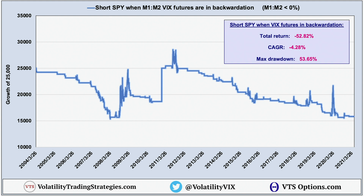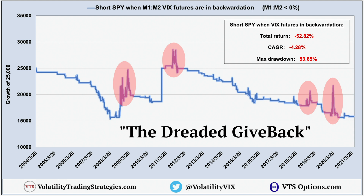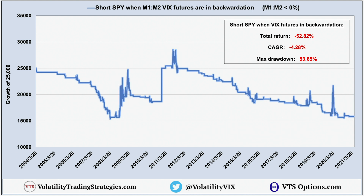In fact, that trader would have lost over half their money following that simple strategy. There are two things causing all of the losses. The first is what I call the slow bleed — this happens every time the futures only temporarily dip into backwardation, meaning the trader is getting short the market just as it's starting to recover, getting whipsawed over and over again. Small paper cuts each time, but they really add up. The second reason is what I call the dreaded give back — this happens after major crashes where the VIX futures can remain in backwardation long after the market has bounced and started going up again, leading the trader to give back some or even all of the previous gains. Essentially the signal that gets you into the profitable trade is the same signal that keeps you in it for too long.